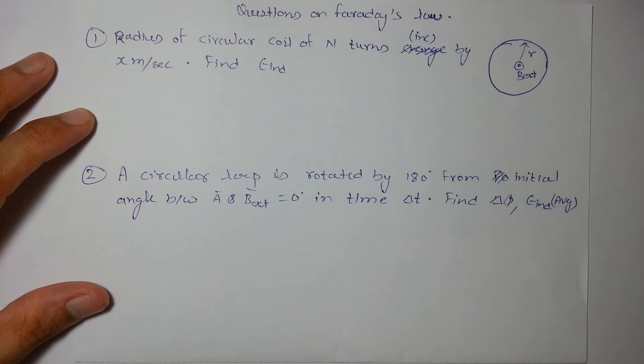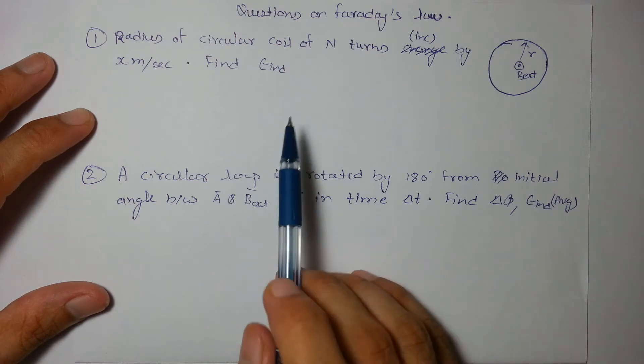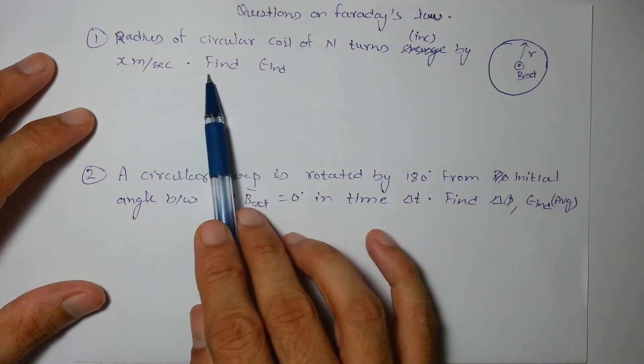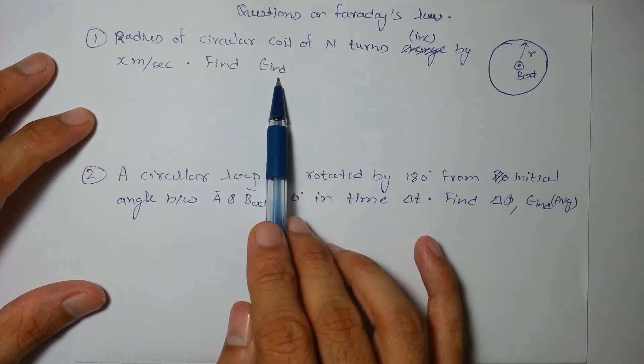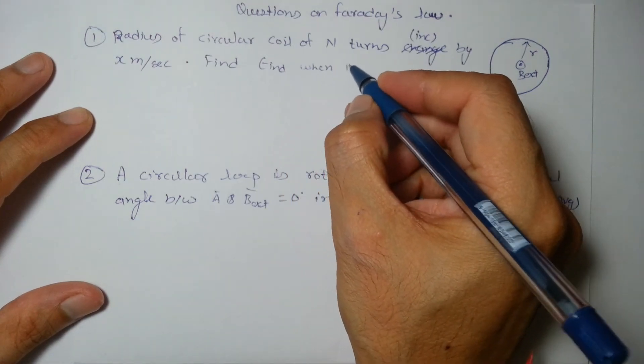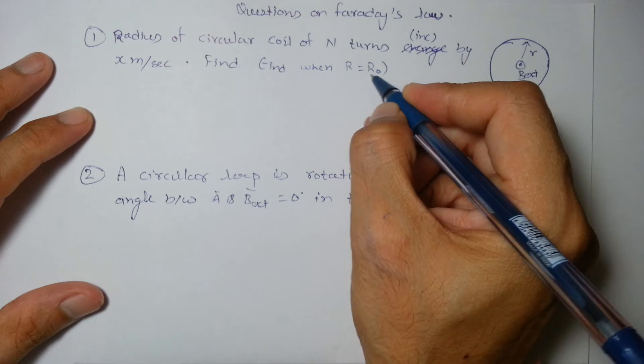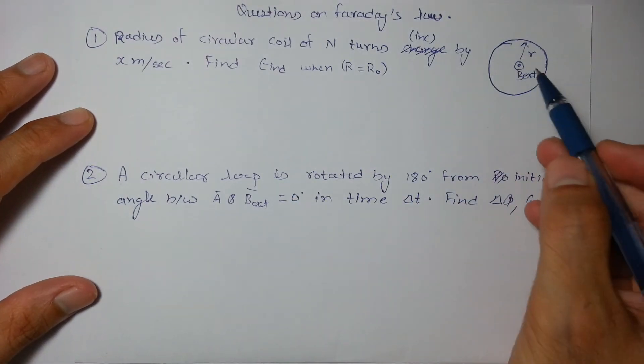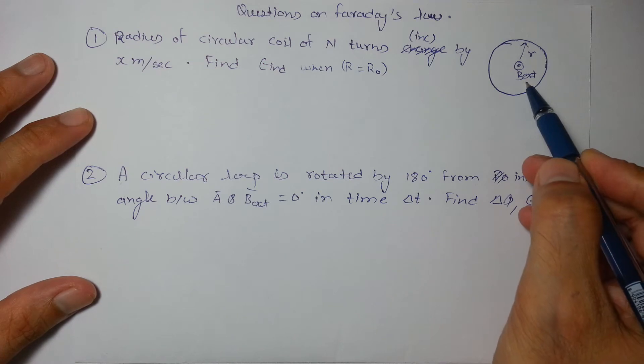In the first question the radius of circular coil of n turns increases by x meter per second. You have to find the induced EMF when radius is equal to R0. So external magnetic field is out of the plane of paper.